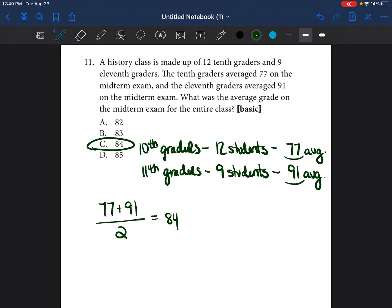They're not asking you, what is the average between the two different grades. If they were asking what's the average between the two grades, then 84 would be the answer. But they're actually asking you what is the average grade for the entire class. Meaning out of the total number of students, which would be 12 plus 9, which is 21 students. Out of 21 total students, what is the average grade that they got?